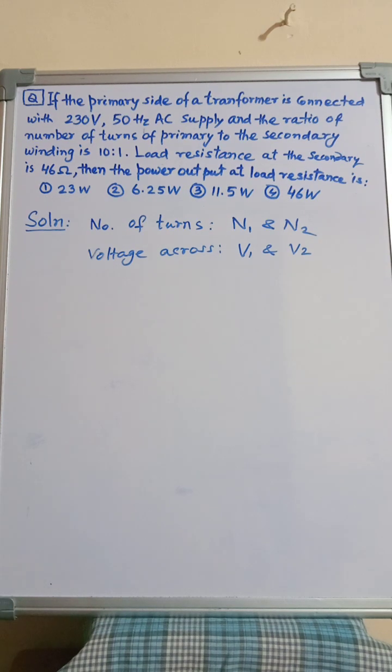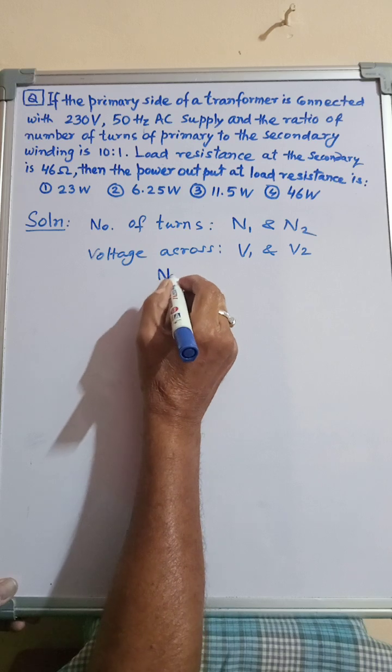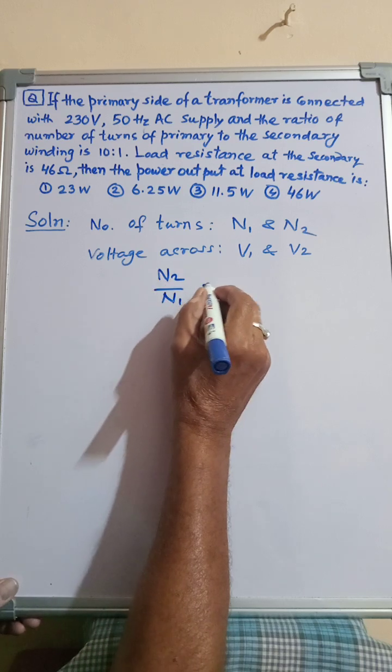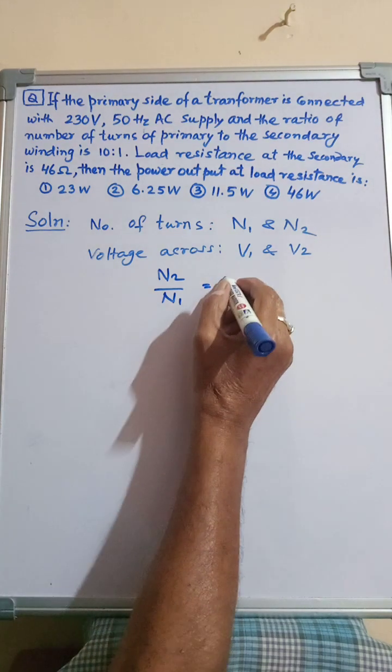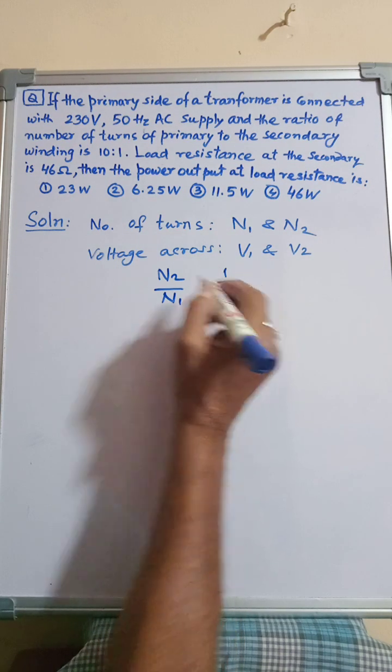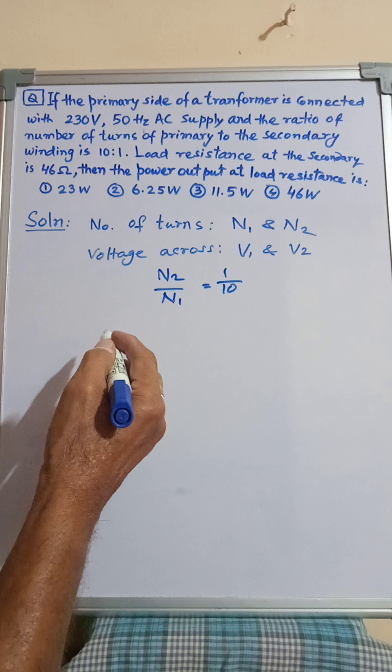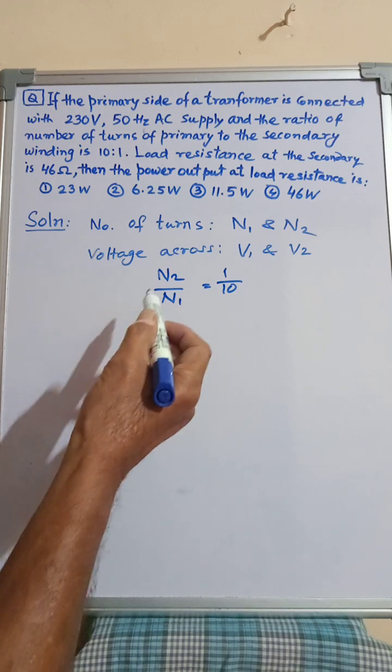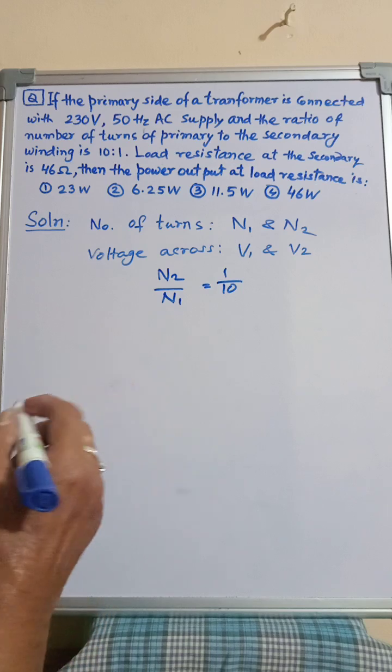Now it is given in the question that N2 by N1 is equal to 1 by 10. The voltage ratio is also equal to the number of turns ratio because the flux linked with both coils is the same.